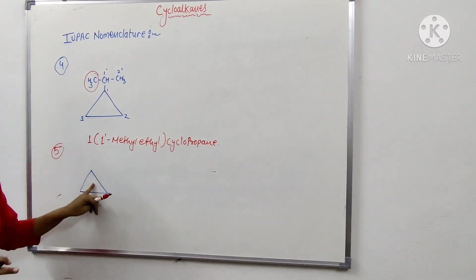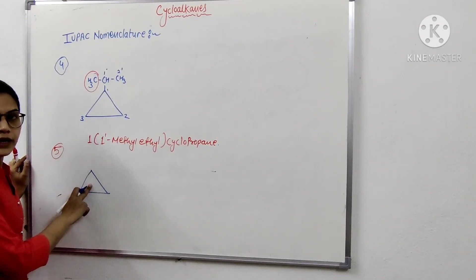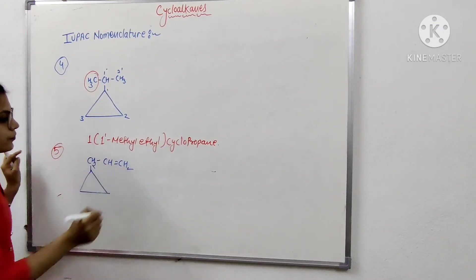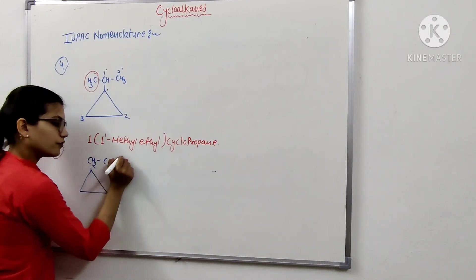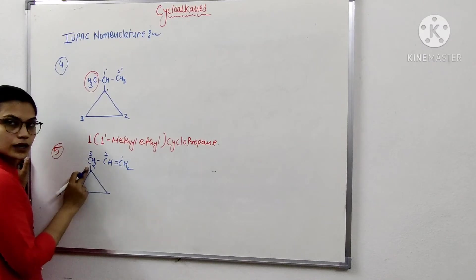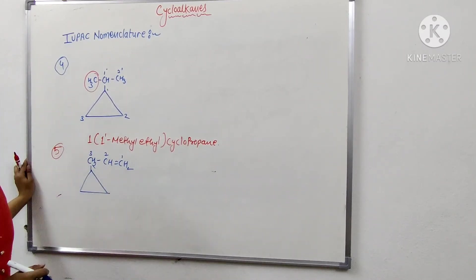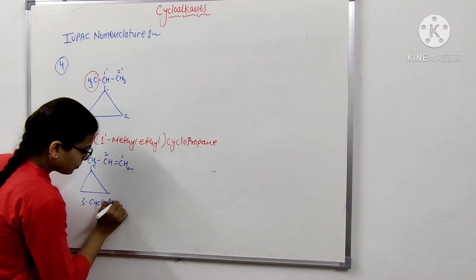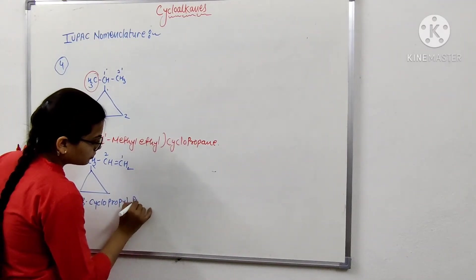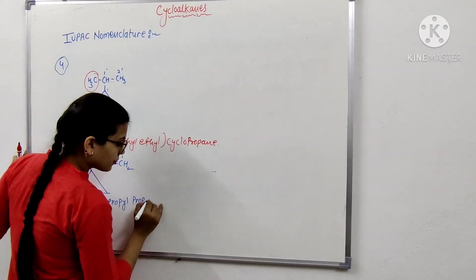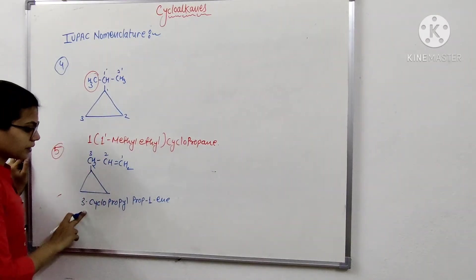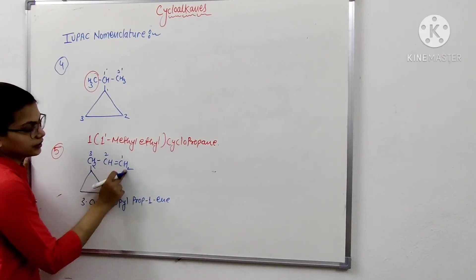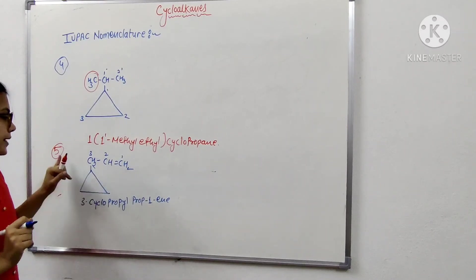Again, a three-member ring — it is a cyclopropane, consisting of CH2, CH, and CH. Numbering in this structure: 1, 2, and 3. There are again three carbon atoms present in this structure. Its name is 3-cyclopropylprop-1-ene (3-cyclopropenylpropene).